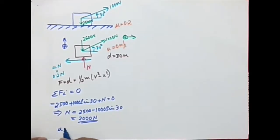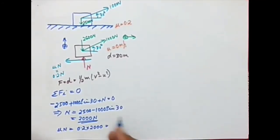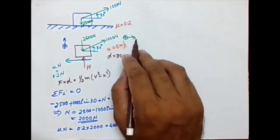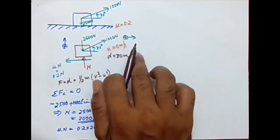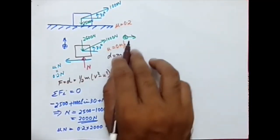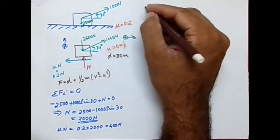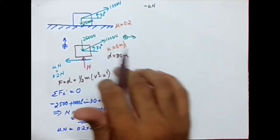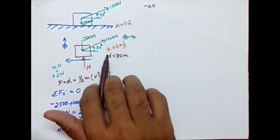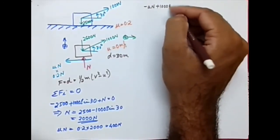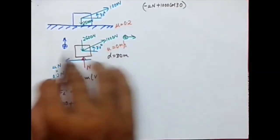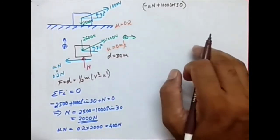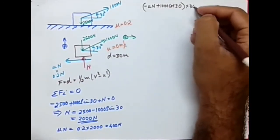The frictional force mu N equals 0.2 times 2000, which gives 400 Newton. Now applying the work-energy principle, taking rightward as positive: the forces in the direction of motion are minus mu N (to the left) and plus 1000 cos 30 (to the right). The displacement is 30 meters.